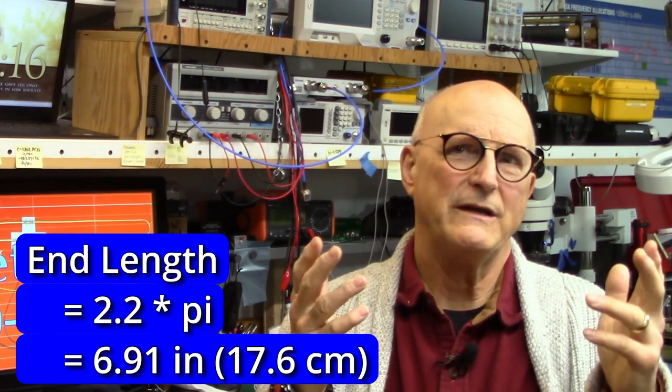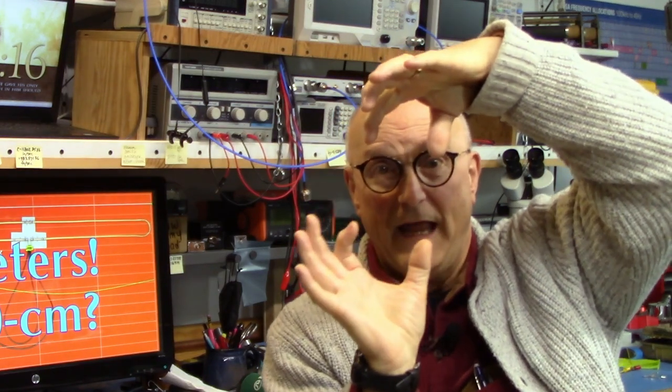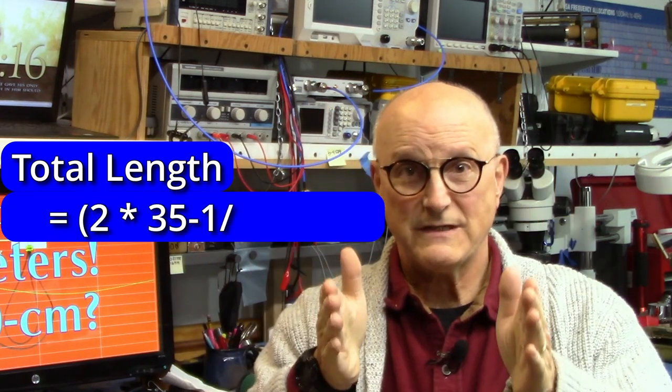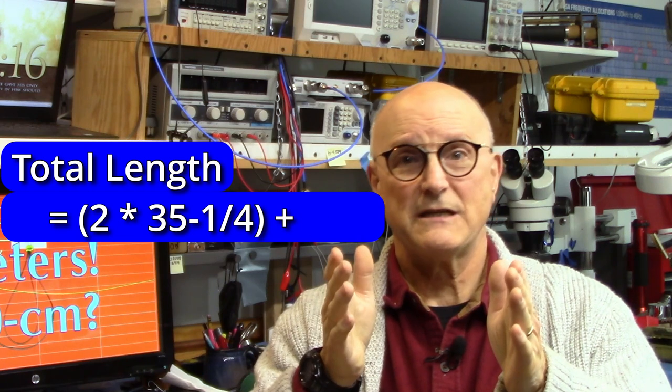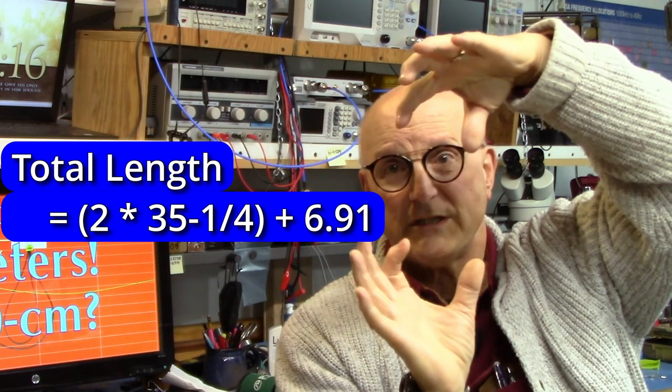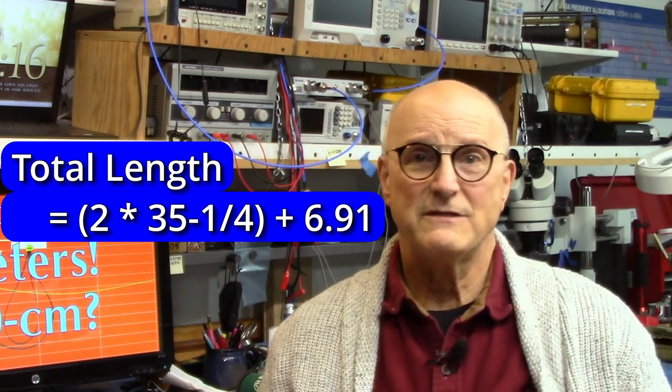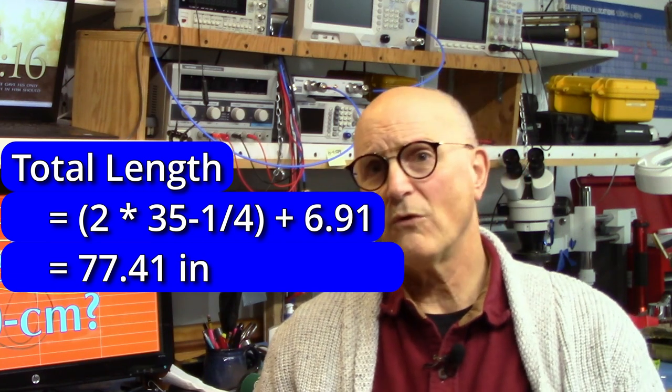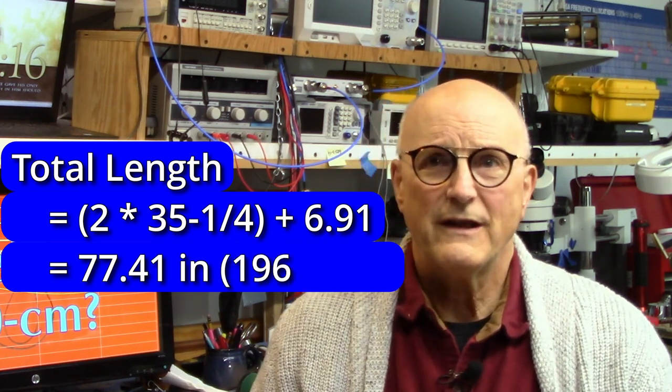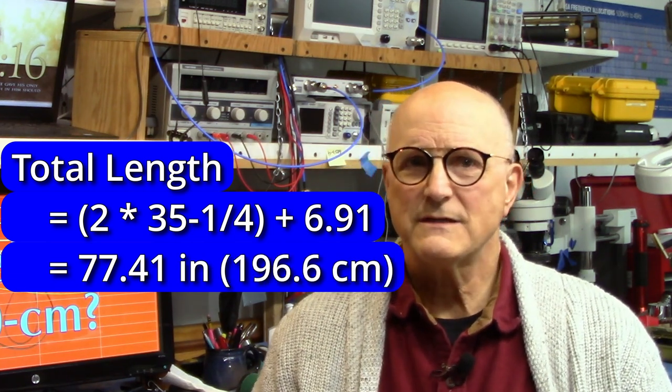Now we're only going to need one of these because, like I said, that's the full circumference of the circle and we're using half for the top and half for the bottom. So we add it all together, we get 2 times 35 and a quarter, which are the sides, plus 6.91, which is the two ends, which gives us 77.41 inches or 196.6 cm.